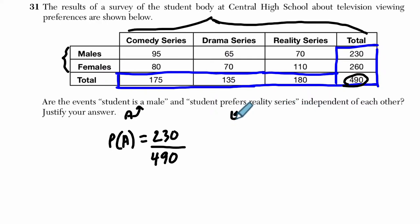Student prefers reality series, let's call this B. So where are the reality series? They're in this column right here. And if I look down the column, to the very bottom, to the marginal frequency of 180 here at the bottom, that 180 tells me the total number of people who prefer reality series. So let's write that down. So the probability that a person likes a reality series is 180 out of 490.